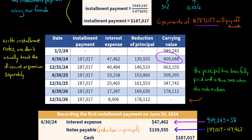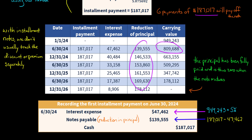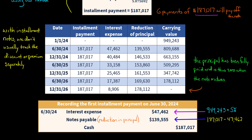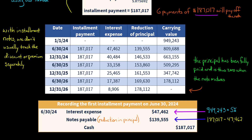The borrower doesn't have to go pay a million dollars at maturity — they've been paying off a little bit of the principal every six months. For the journal entry on June 30th, 2024 — the first payment date — the borrower debits interest expense $47,462. The interest expense came from the initial carrying value times the market rate divided by two. Then we debit notes payable for the reduction in principal. Interest expense plus the reduction in principal equals the total cash paid — $187,017 — which is the installment payment.